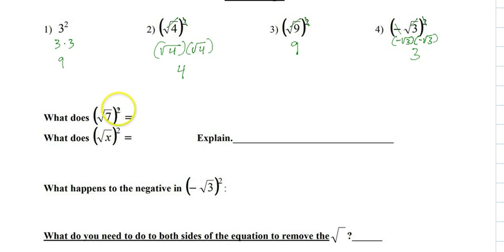Here's what we can remember: they cancel and give you seven, cancels and gives you x. So the square cancels the square root.